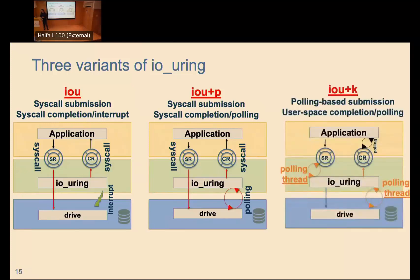The third variant, io_uring+K, is the most complex and most innovative. In this variant, every single io_uring instance — every process using io_uring — spawns an additional kernel thread. This kernel thread polls the submission queue so the kernel knows when the application has submitted a new request, and also polls the drive for completion. The application also polls the completion ring. So for each process, there is one application thread and one kernel thread, both doing polling — no system calls, no interrupts — very similar to what SPDK does.